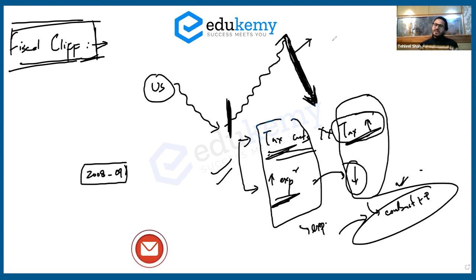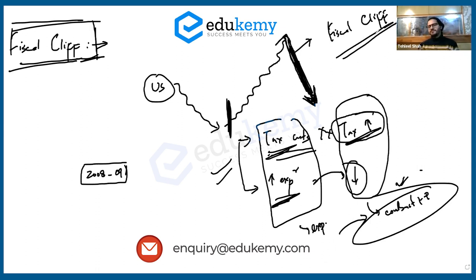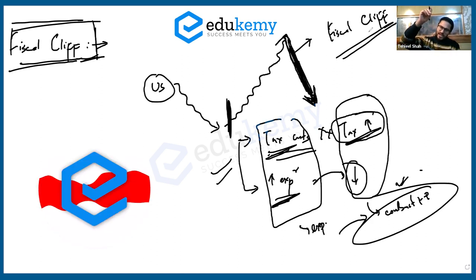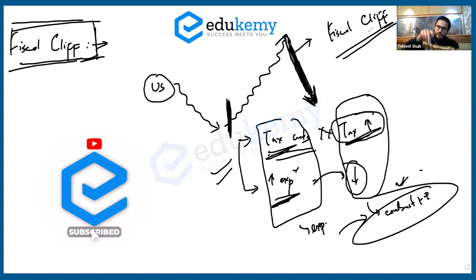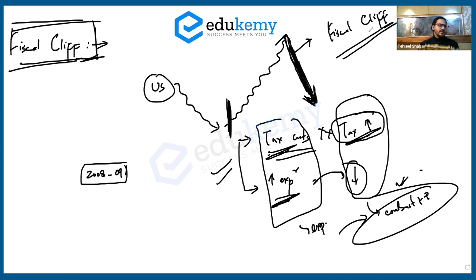So this is known as fiscal cliff. Fiscal cliff means when you go for a long period of time, you keep on increasing expenditure, you go for tax cuts so that the economy is expanding and going up. And once you stop that and you reduce the expenditure, economy falls back. That is your fiscal cliff. Is it clear?